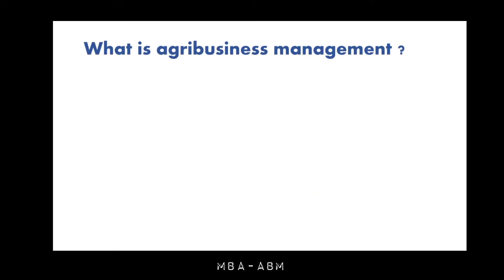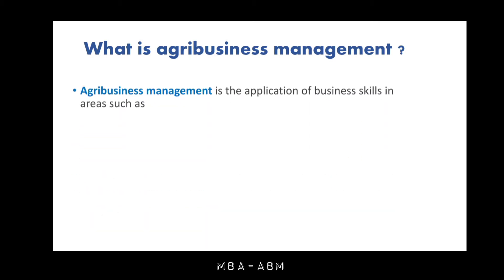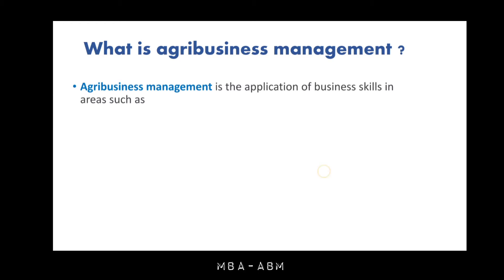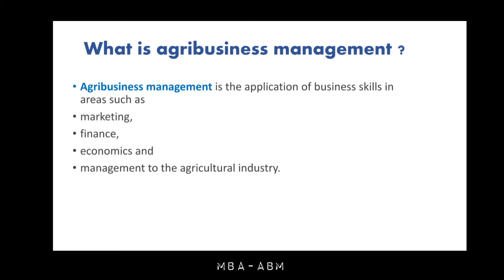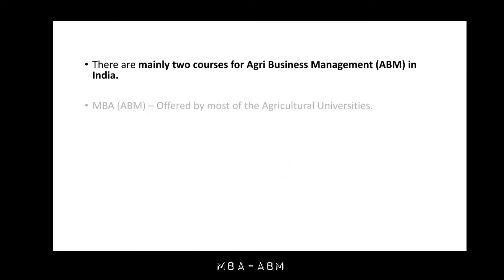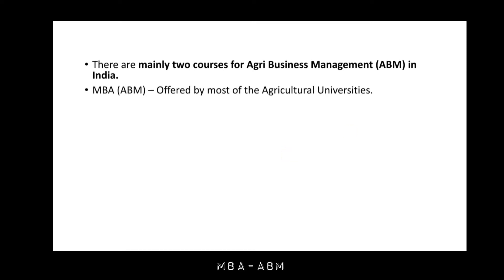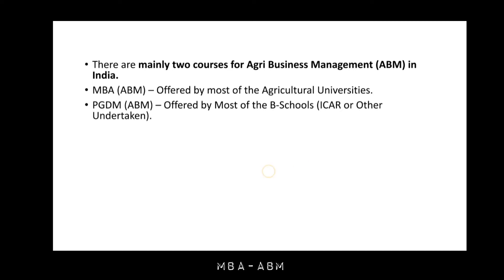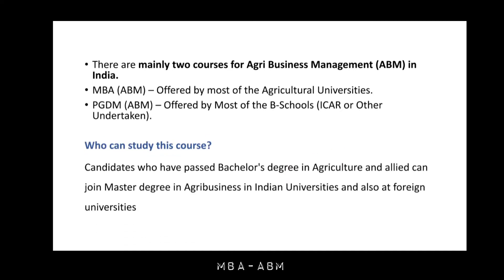Agribusiness management is the application of business skills in areas such as marketing, finance, economics, and management to the agriculture industry. There are mainly two courses for agribusiness management in India: MBA in agribusiness management offered by most agriculture universities, and PGDM offered by most B-schools.